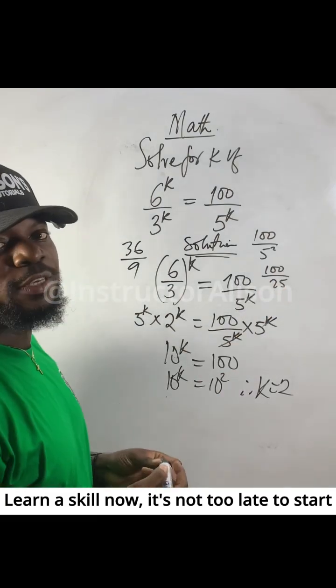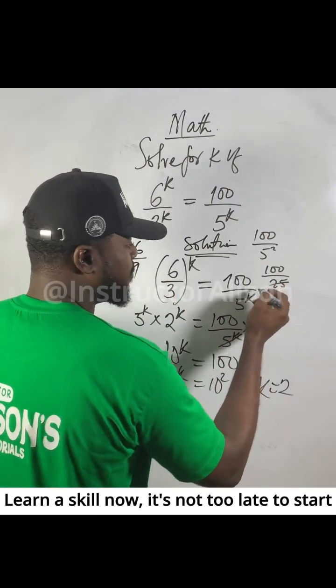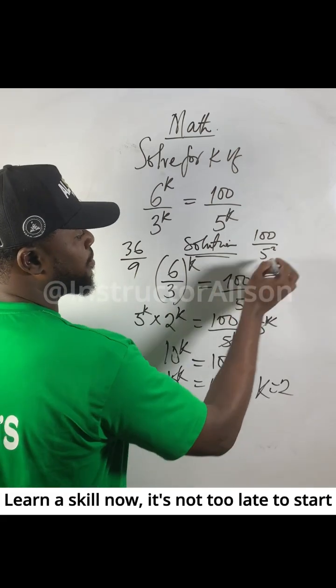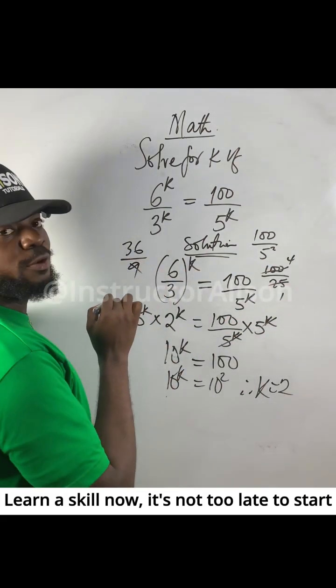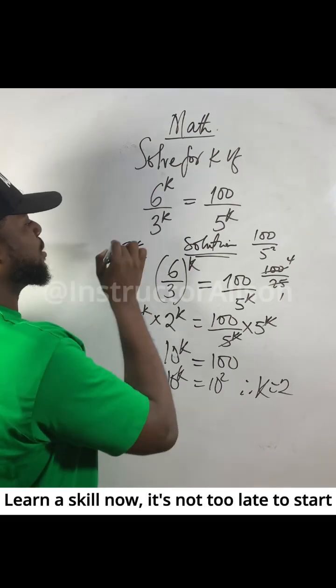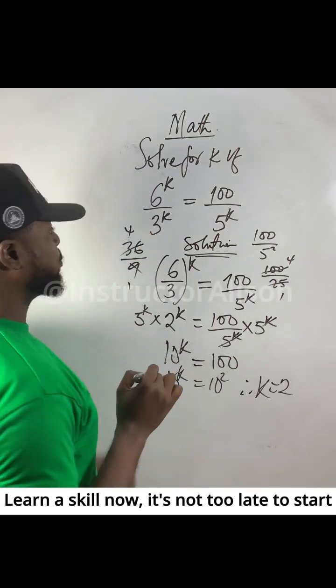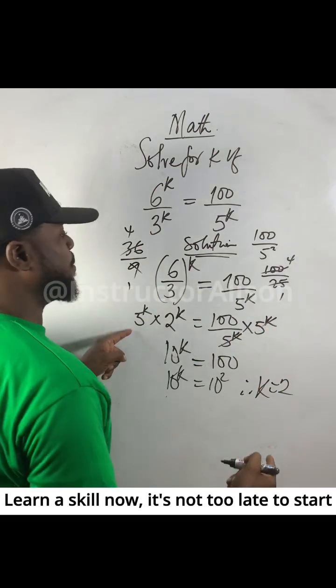If you divide, 25 goes into 100 four times. Nine goes into 36 four times. So you get 4 equals 4, which gives the right answer.